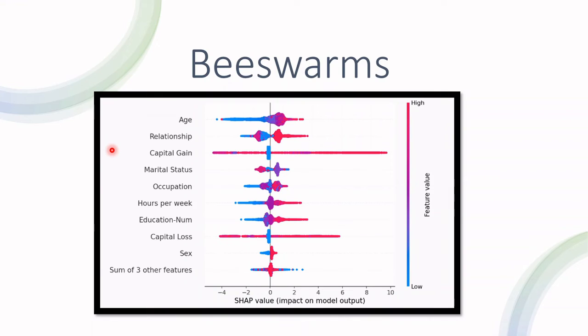The other is someone who's earning below fifty thousand dollars a year - that's a negative class. We have some sort of machine learning model that gets these features as inputs and outputs whether it's a positive or negative class.